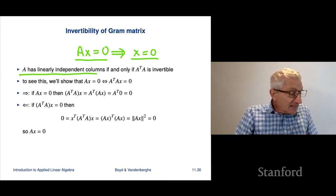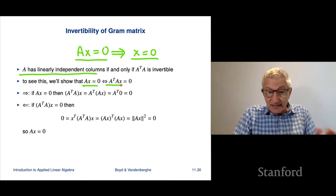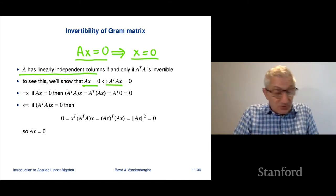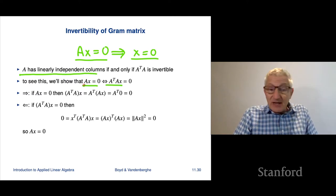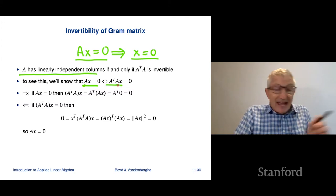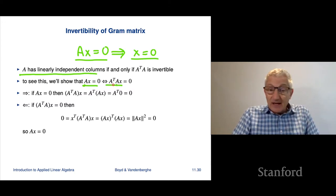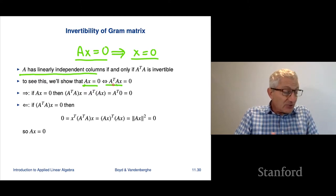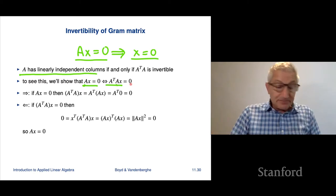To show this, what we're going to show is that Ax equals 0 if and only if A transpose Ax equals 0. Now, these are different sizes. If A is m by n, the vector Ax has size m. A transpose Ax has size n, because A transpose A is an n by n matrix, and the zero on the right-hand side is also size n.